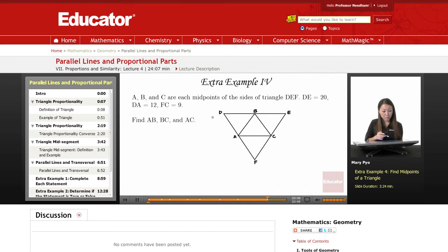Okay, the last one. A, B, and C are each midpoints of the sides. So they're midpoints of each of the sides of the triangle D, E, F.